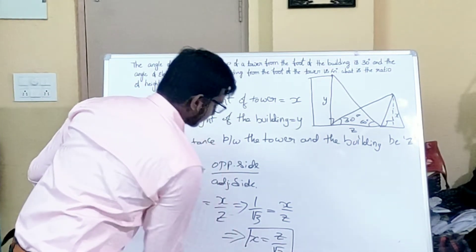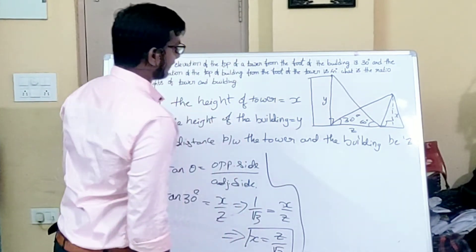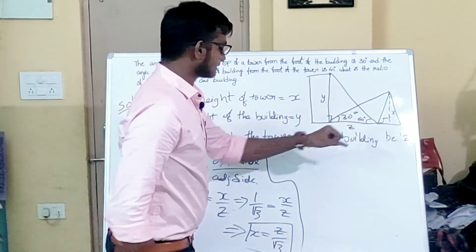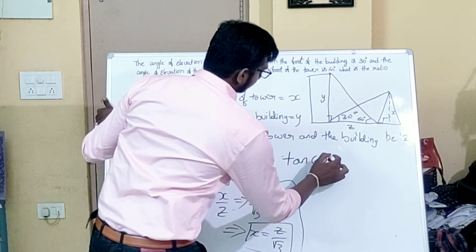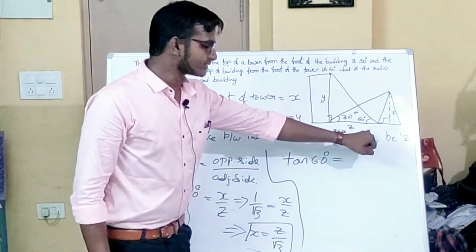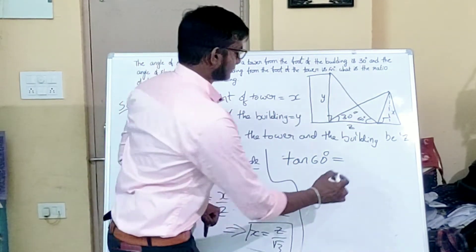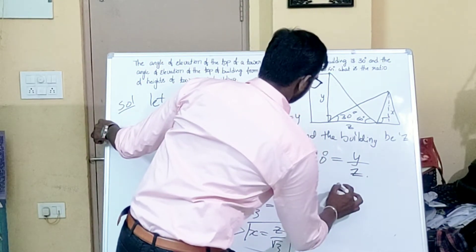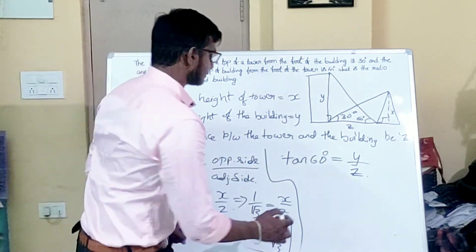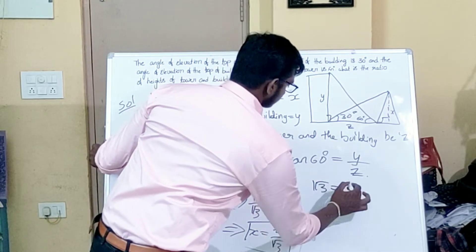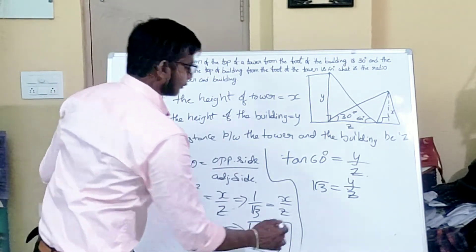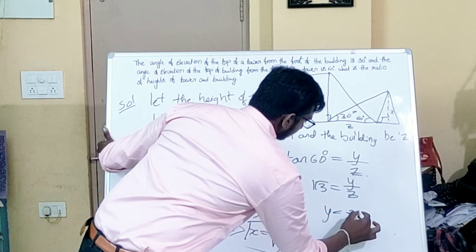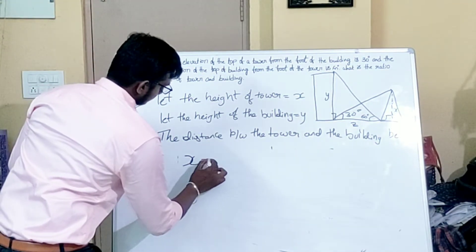Therefore x = z/√3 — we've found the height of the tower. Now for θ equals 60 degrees: tan 60° equals the opposite side y over the adjacent side z. Since tan 60° = √3, we get √3 = y/z.